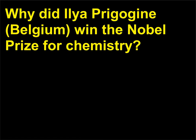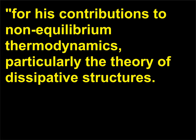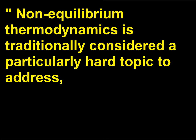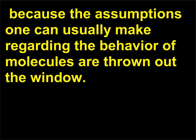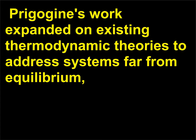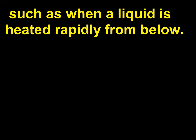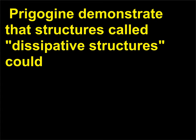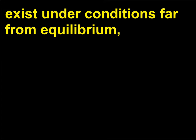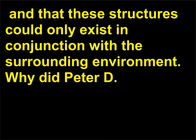For his contributions to non-equilibrium thermodynamics, particularly the theory of dissipative structures. Non-equilibrium thermodynamics is traditionally considered a particularly hard topic to address, because the assumptions one can usually make regarding the behavior of molecules are thrown out the window. Prigogine's work expanded on existing thermodynamic theories to address systems far from equilibrium, such as when a liquid is heated rapidly from below. Prigogine demonstrated that structures called dissipative structures could exist under conditions far from equilibrium, and that these structures could only exist in conjunction with the surrounding environment.